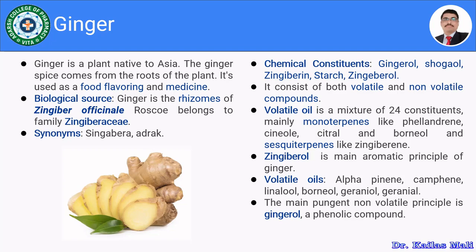These are the synonyms of ginger. Look at the slide and see the image related to the ginger rhizome. Moving towards the chemical constituents present in ginger: mainly, ginger comprises gingerol, shogaol, zingiberene, starch, and related compounds. These are the major chemical constituents of Zingiber officinale.